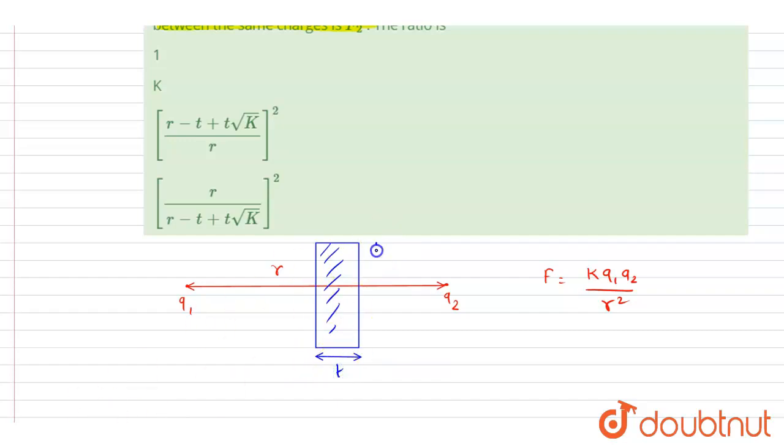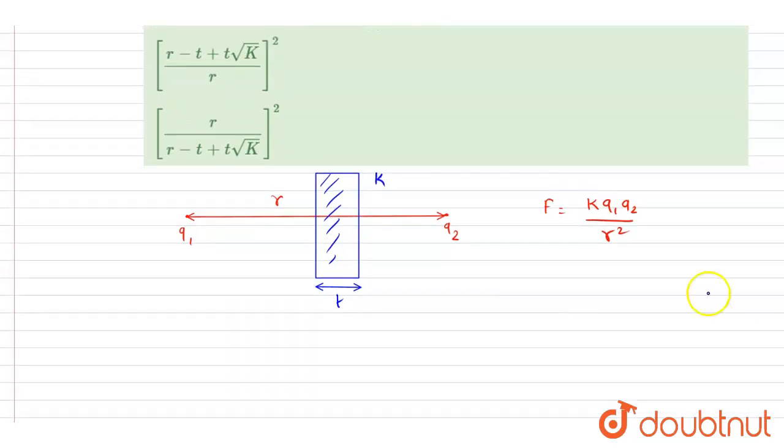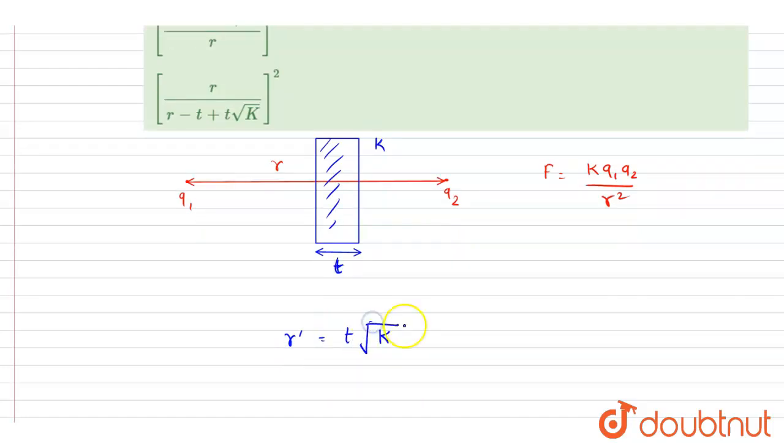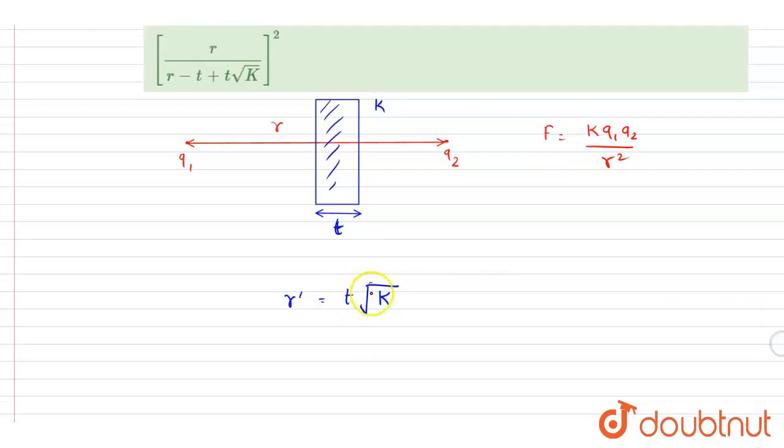This thickness is t. So we know that when you insert a dielectric in between the two charges, the force changes. And if you calculate the r dash, it will be equals to t into root k.